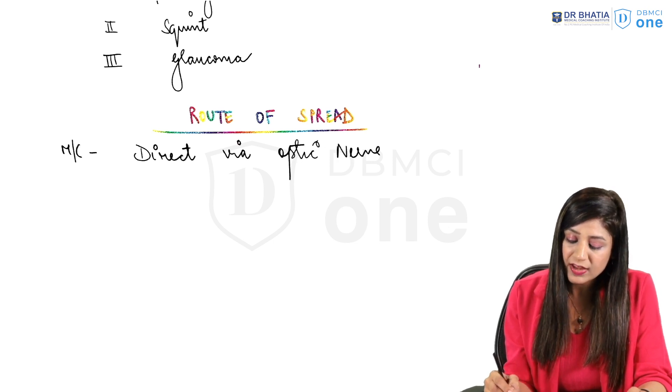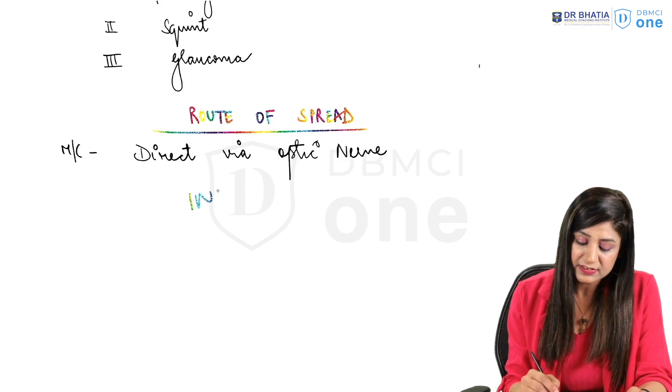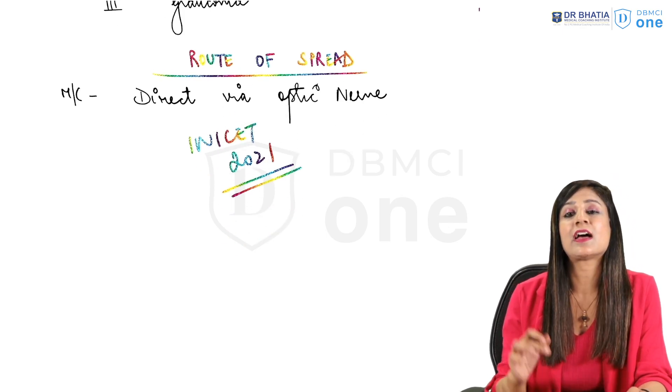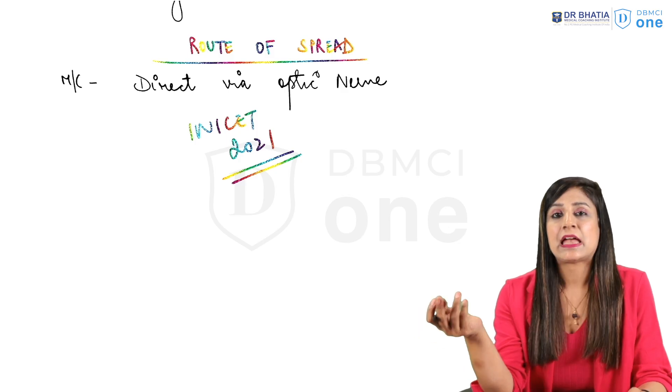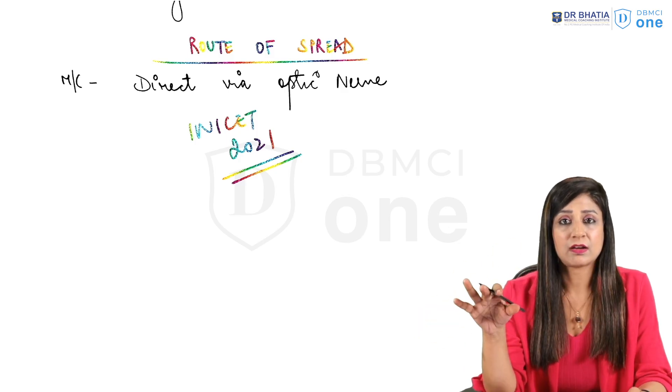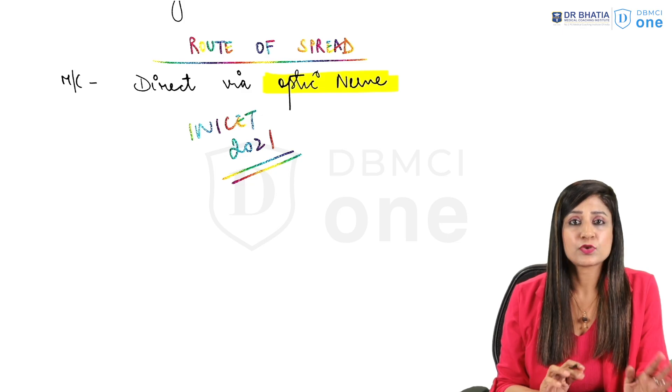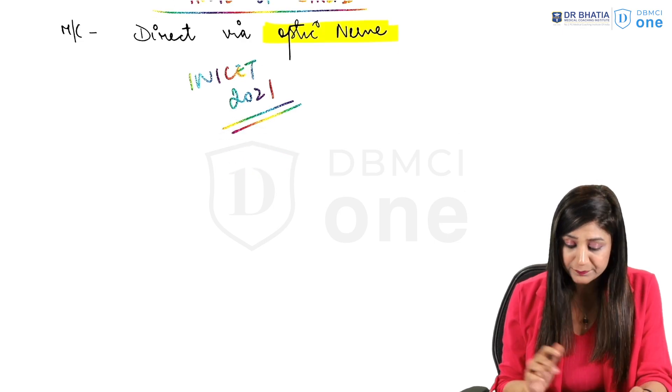If you see a PYQ that was asked in NEET 2021, there was a question where they had asked the most common route of spread and they had given both direct and optic nerve. Then in that case, you have to choose always the optic nerve. So I am breaking the controversy over it.